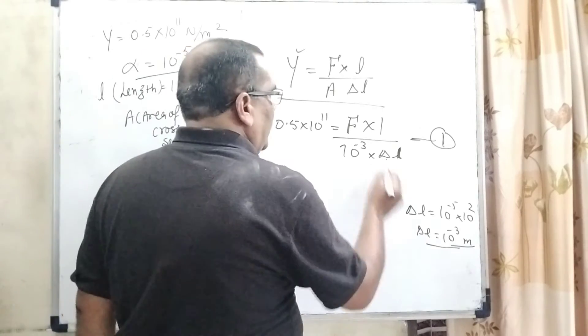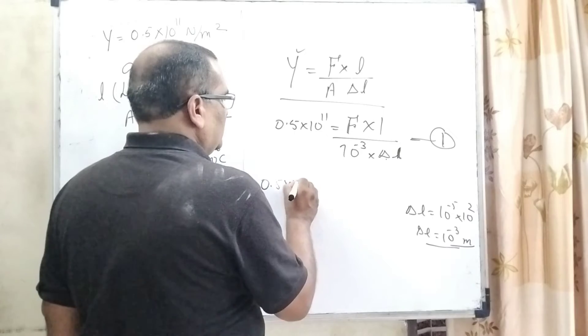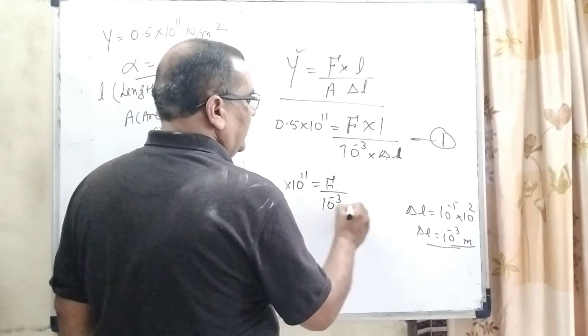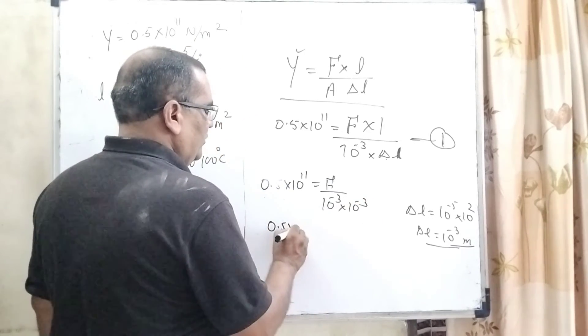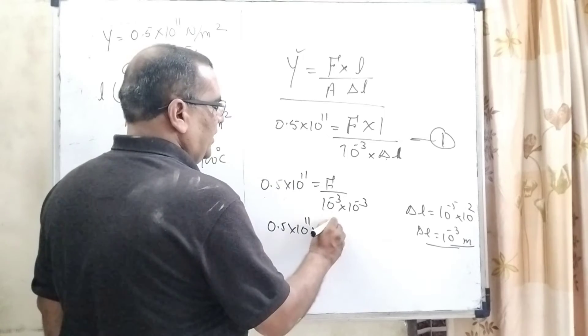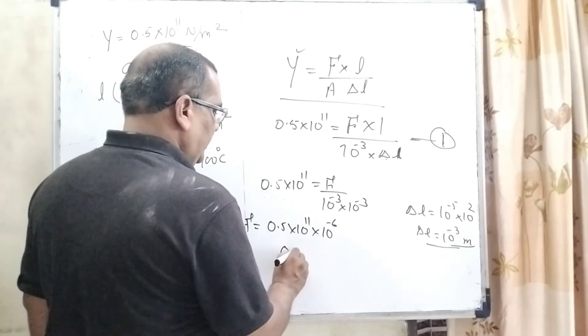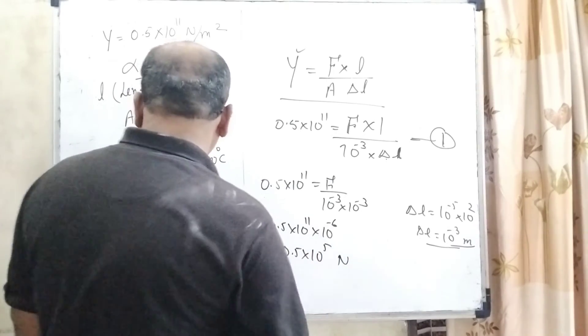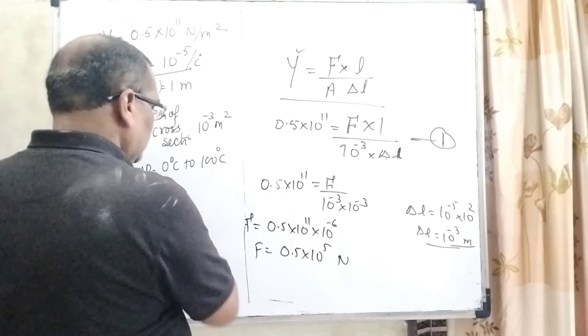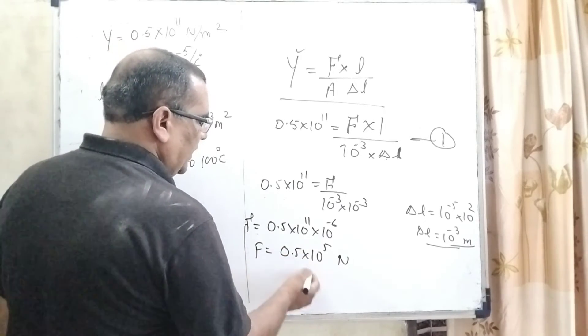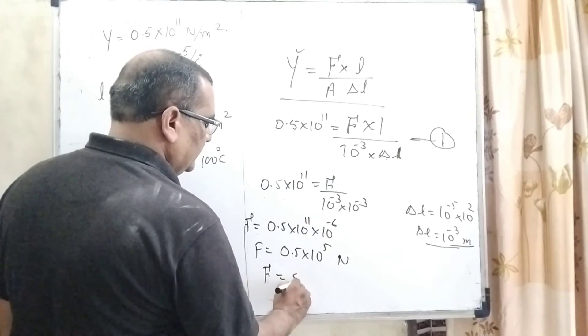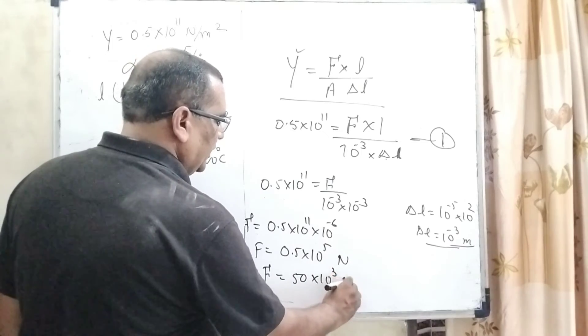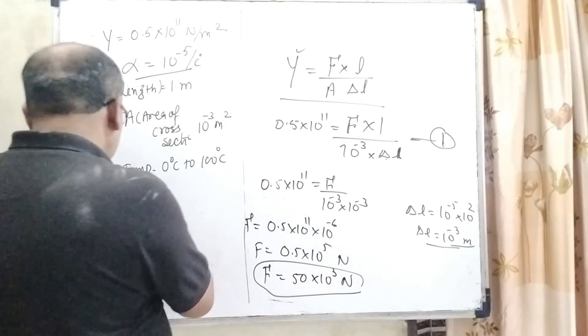Now, substituting the value of delta L in the first equation: 0.5 into 10 raised to power 11 equals F into 1 over 10 raised to power minus 3 into 10 raised to power minus 3. Then 0.5 into 10 raised to power 11 into 10 raised to power minus 6 equals F, which can be written as 0.5 into 10 raised to power 5. Multiply by 100 both sides in numerator and denominator. Then we get 50 into 10 raised to power 3 Newton. So, option B is correct.